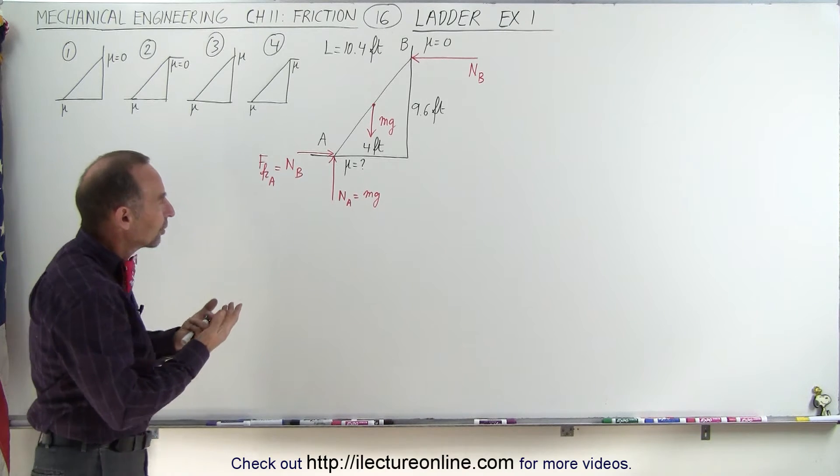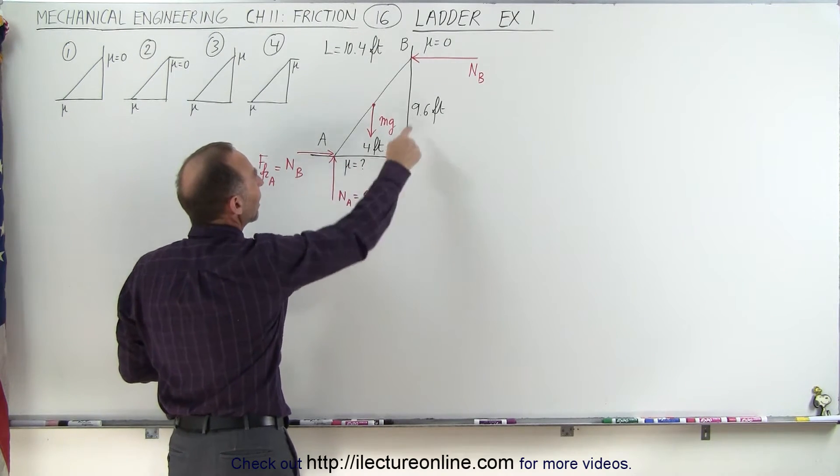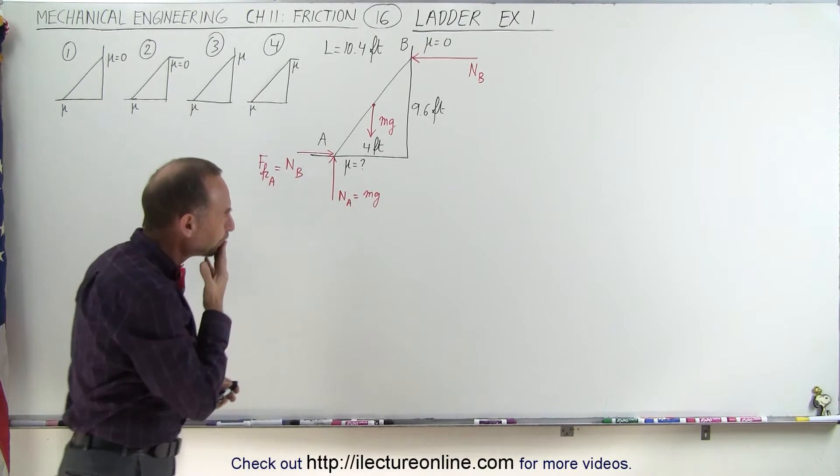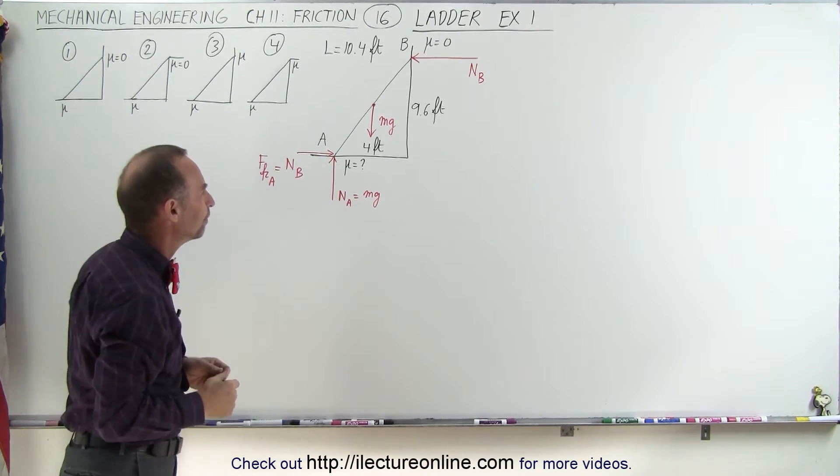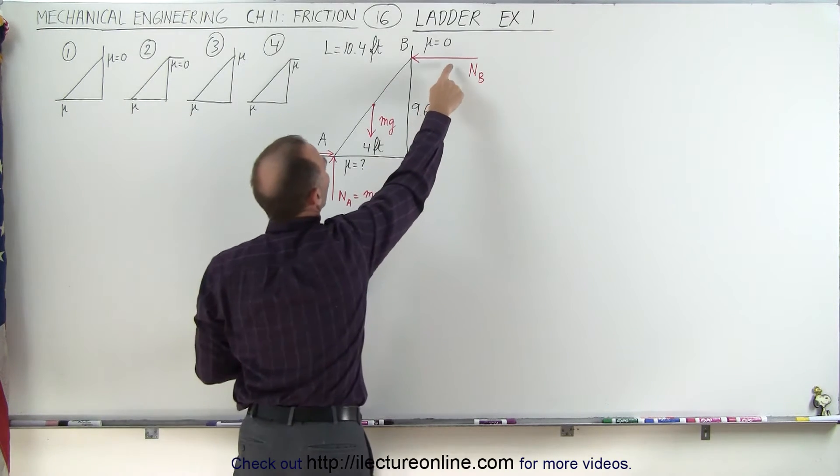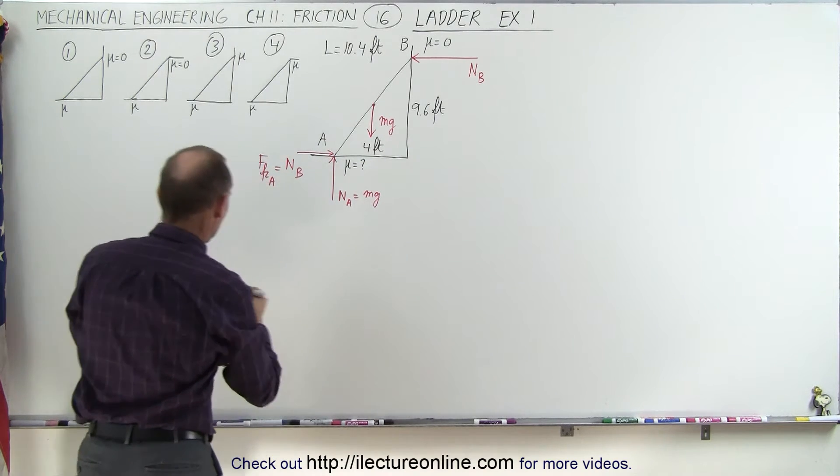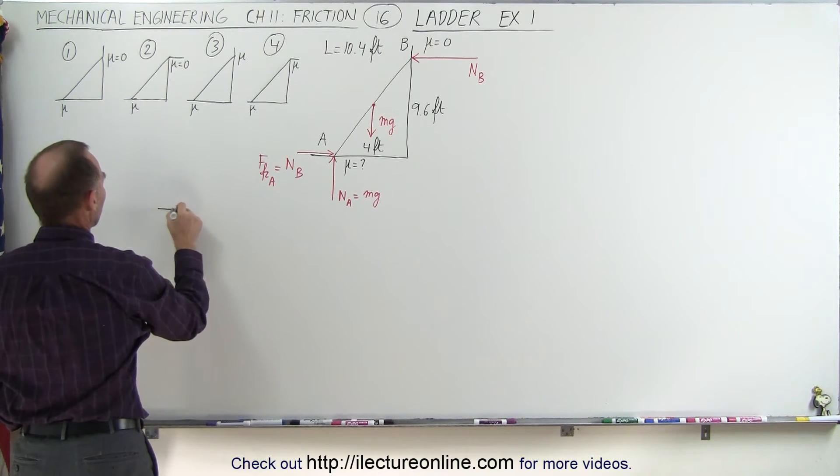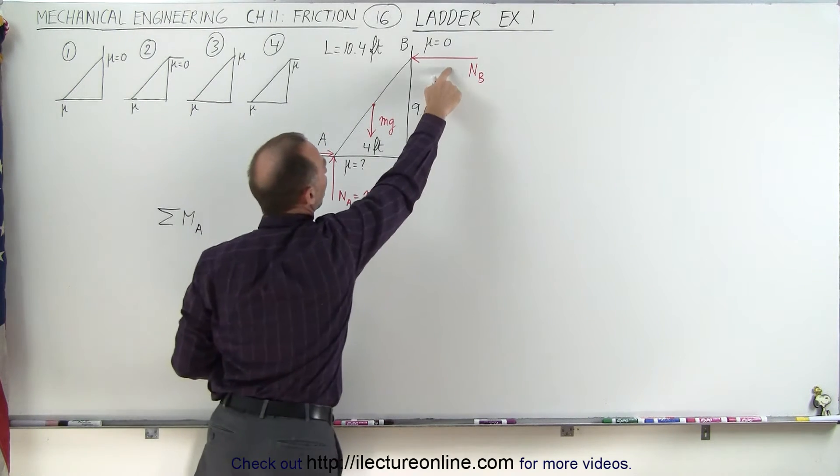The purpose of this particular example is to find the friction required here to keep the ladder from sliding. So we're trying to find the coefficient of friction down here at the bottom. To do that, we're going to try to figure out the normal force here by summing up the moments about point A. So we'll start off with finding the moments about point A to determine the normal force at B.